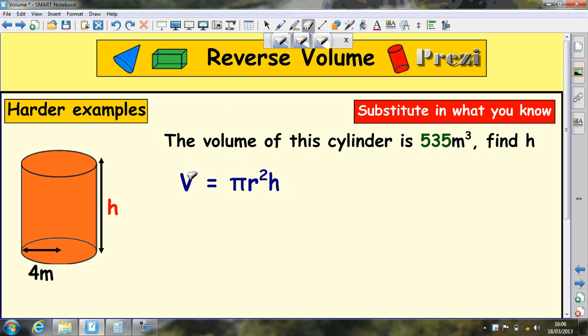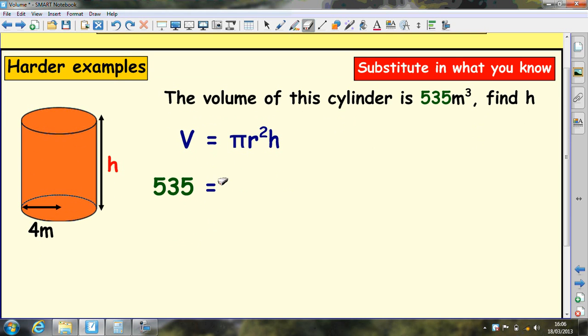We're told that the volume of the cylinder is 535 meters cubed, so put that in. 535 equals, we know what pi is, we know what the radius is, it's 4. So we can have 4 squared, but we don't know what the height is, so we put times h. This time our unknown is the h, not the V. We're trying to work out the h.